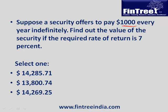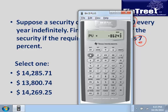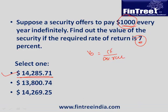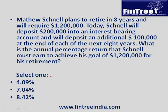Suppose a security offers to pay $1,000 every year indefinitely. Find the value of the security if the required rate of return is 7%. This is a straightforward perpetuity. The value of a perpetuity at time zero is simply cash flow divided by the discount rate: 1,000 divided by 7% equals $14,285.